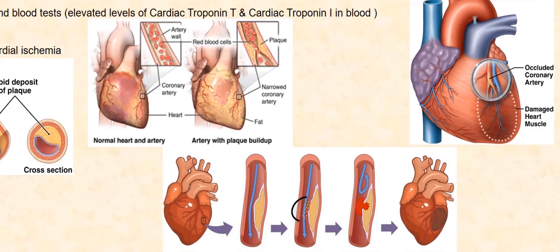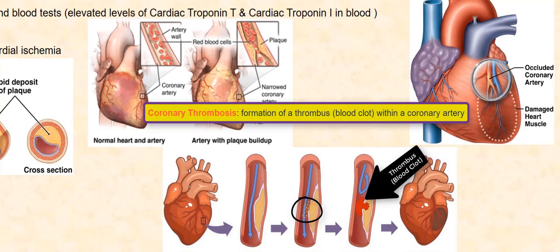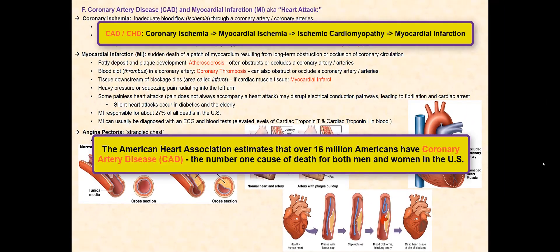The plaque can become unstable and cause the formation of a blood clot. A blood clot is called a thrombus. If the formation of the thrombus occurs at a coronary artery, this is called coronary thrombosis. The coronary thrombosis further reduces the supply of oxygen to the myocardium, since it further narrows the opening of the artery. Coronary ischemia can be the result of atherosclerosis and or the formation of a thrombus. Coronary ischemia can lead to myocardial ischemia, which weakens the cardiac muscle fibers resulting in ischemic cardiomyopathy.